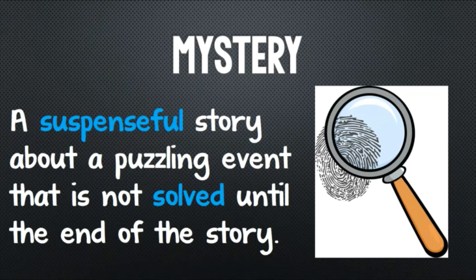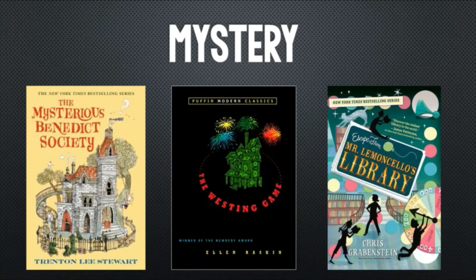The fifth subgenre of fiction we'll talk about is mystery. A mystery is a suspenseful story about a puzzling event that is not solved until the end of the story. Here are three novels that can be categorized as mystery. The first novel, The Mysterious Benedict Society, is about a group of children with extraordinary gifts and talents. They are recruited by the mysterious Mr. Benedict, the society's figurehead who suffers from narcolepsy, to infiltrate an evil institute run by his despicable twin brother. The second novel, The Westing Game, features a plot that centers around the will of an eccentric millionaire. The named beneficiaries of the billionaire's will must play a game to discover who murdered him in order to inherit his fortune.